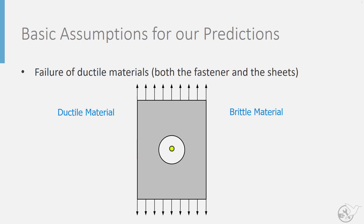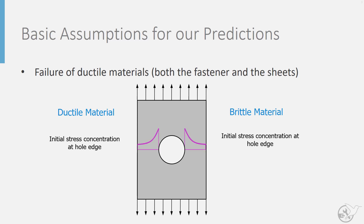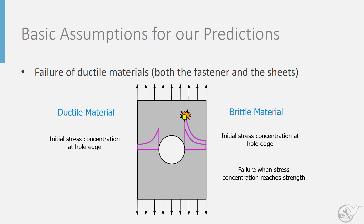The reason for this can be illustrated with a picture of a sheet with a fastener hole in it under a tensile load. In both a brittle and a ductile material, as we apply a load, there will be a stress concentration associated with that fastener hole. If we continue to increase the load, the stress at the edge of the hole will increase. If that material is brittle, this continues until the stress at the concentration reaches the ultimate strength of the material, and then failure will propagate along the plate.